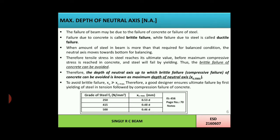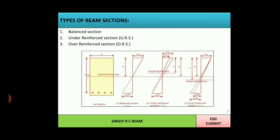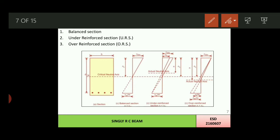To avoid brittle failure, XU should not be greater than XU max. A good designer ensures ultimate failure by first yielding of steel in tension, followed by compression failure of concrete. Values of XU max as per different grades from IS 456, page 70: for Fe 250 it is 0.53d; for Fe 415 it is 0.48d; for Fe 500 it is 0.46d. There are basically three types of beam sections: balanced section, under-reinforced section, and over-reinforced section. In a balanced section, the actual neutral axis and critical neutral axis are at the same level; in an under-reinforced section, the actual neutral axis is above the critical neutral axis; and in an over-reinforced section, the actual neutral axis is below the critical neutral axis.